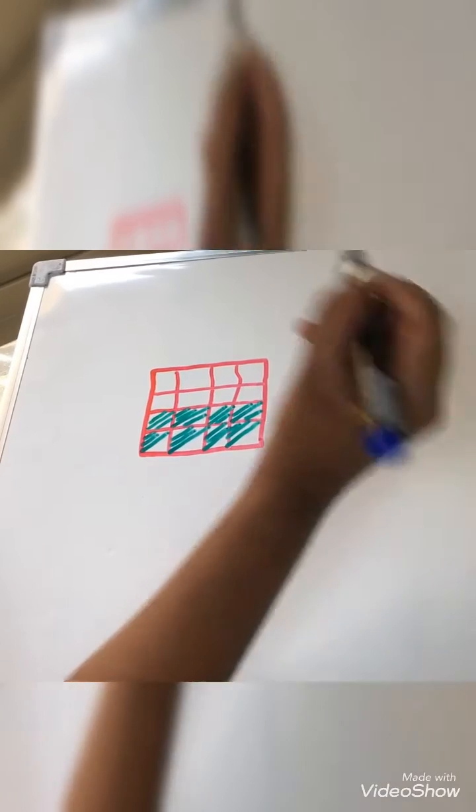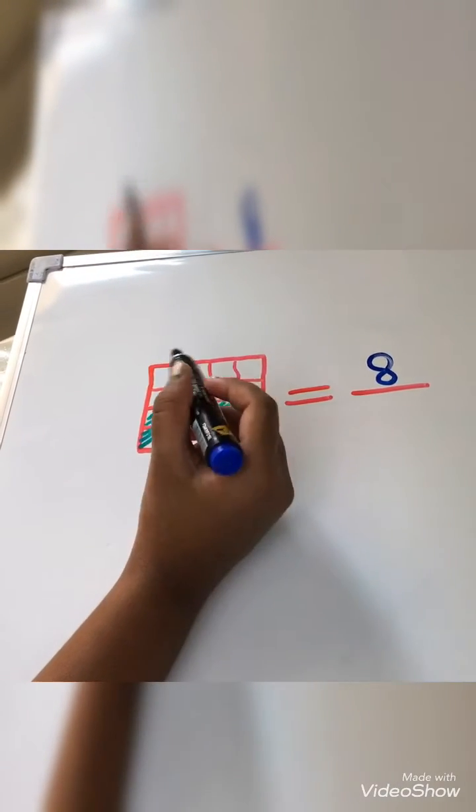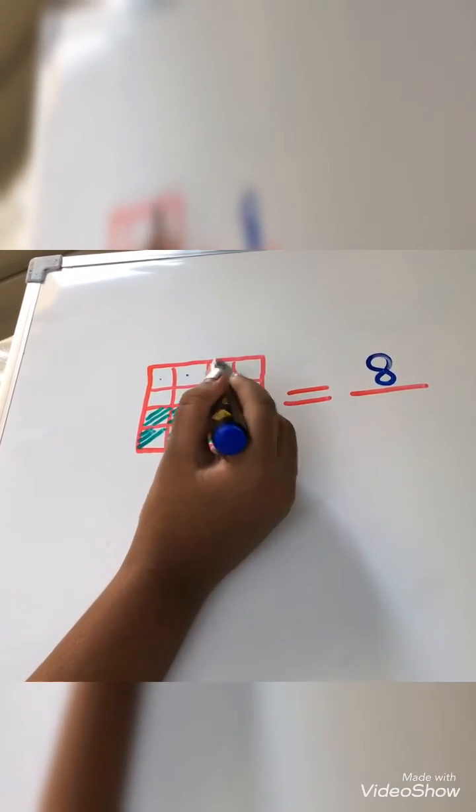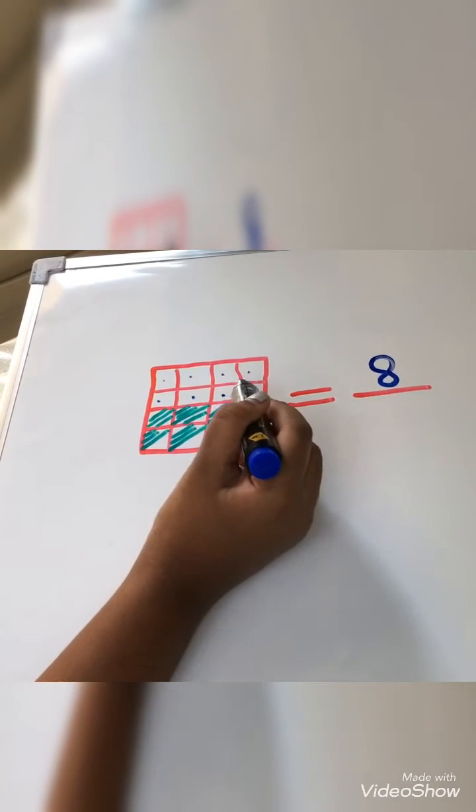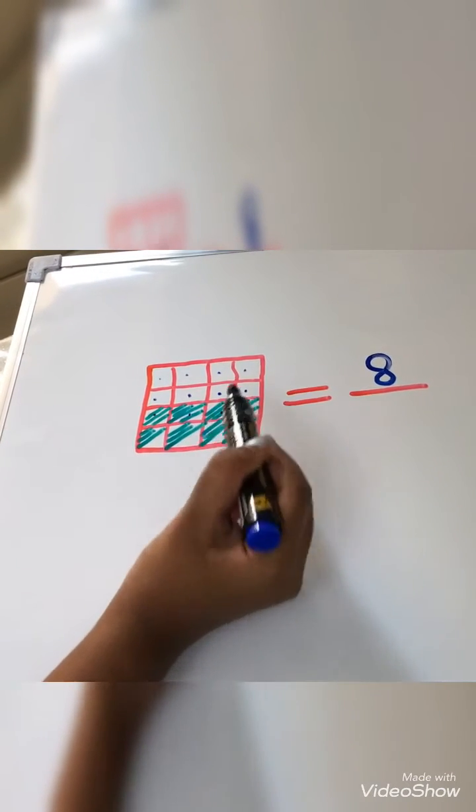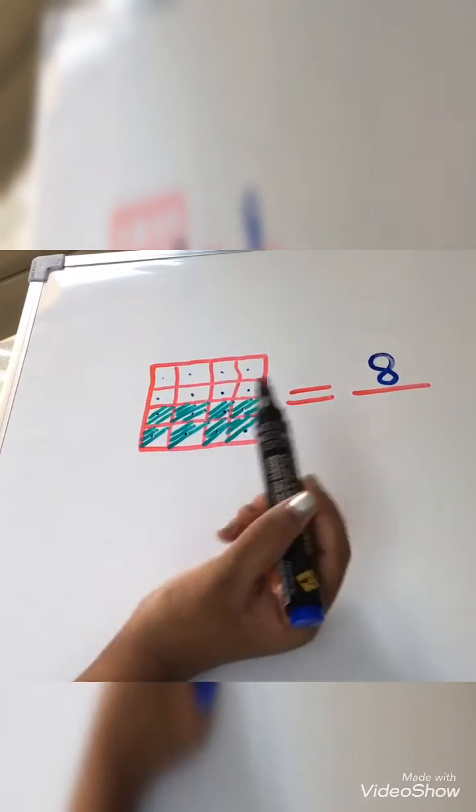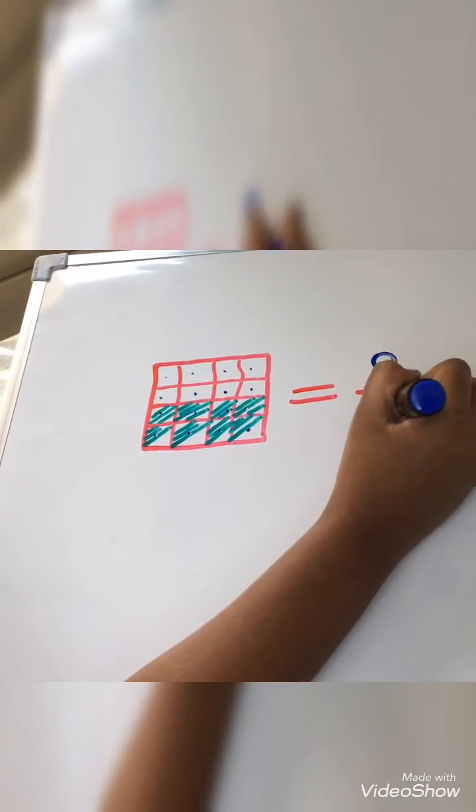And the denominator is the total. Come on, let's count it. 1, 2, 3, 4, 5, 6, 7, 8, 9, 10, 11, 12, 13, 14, 15, 16. Sixteen is the denominator.